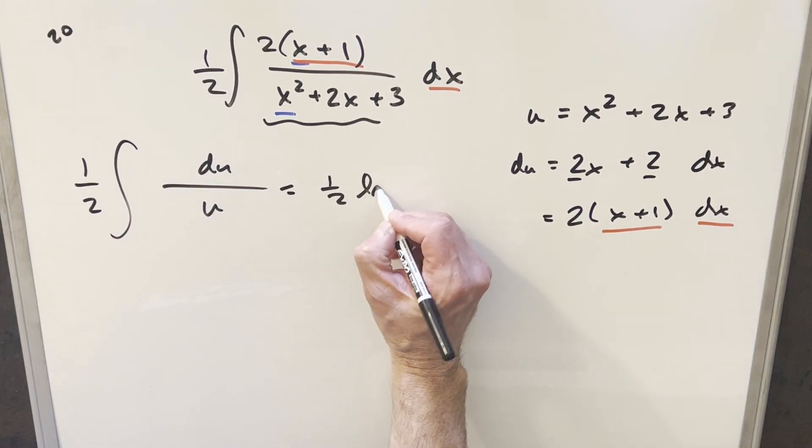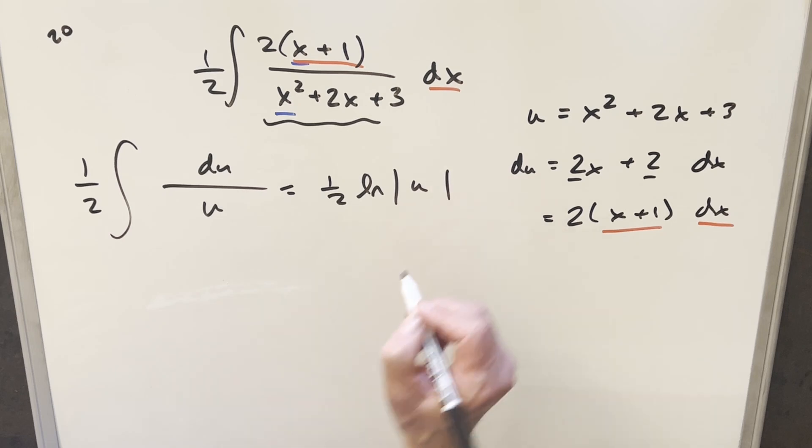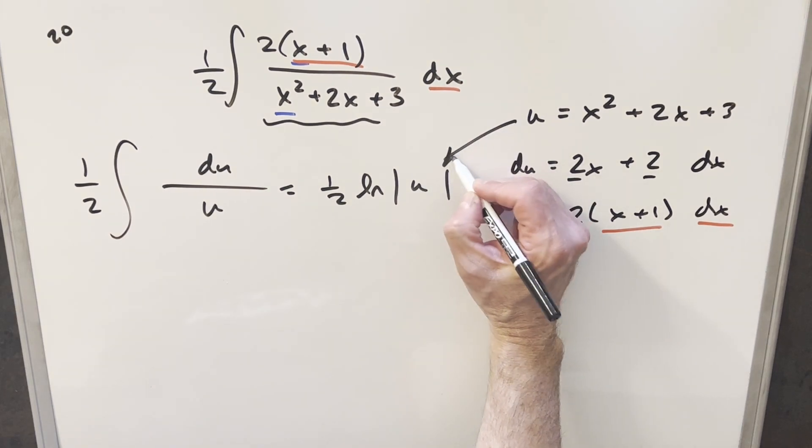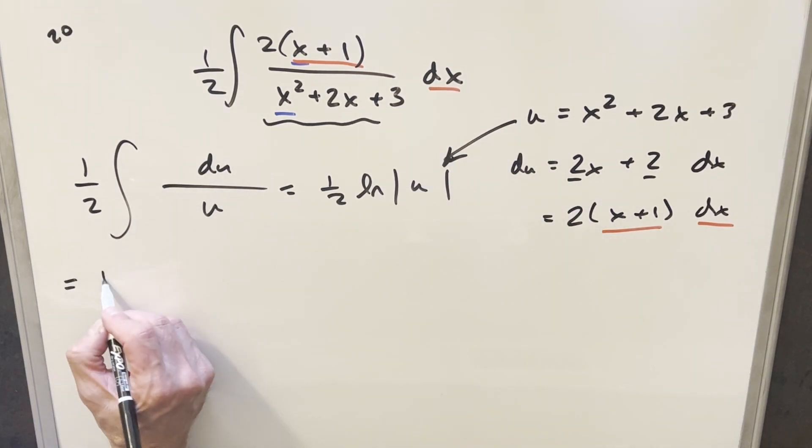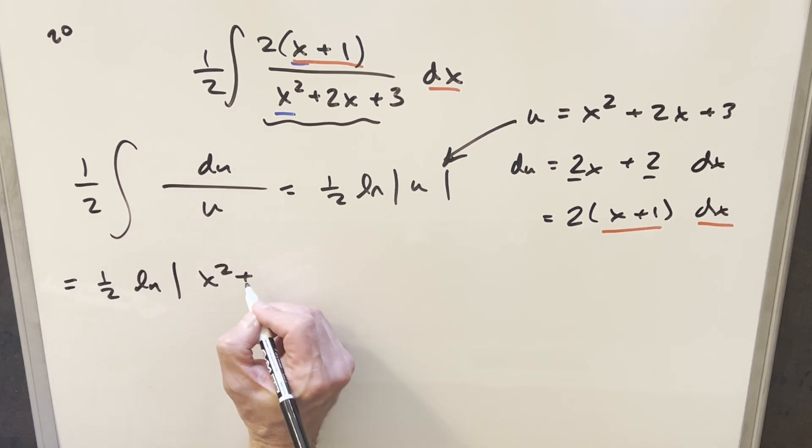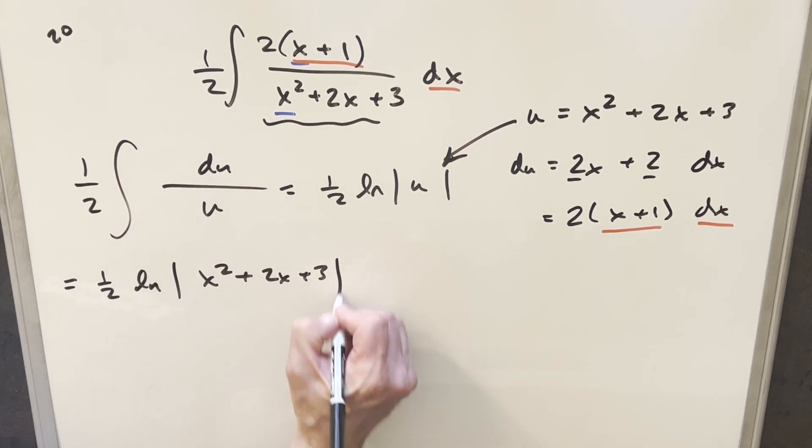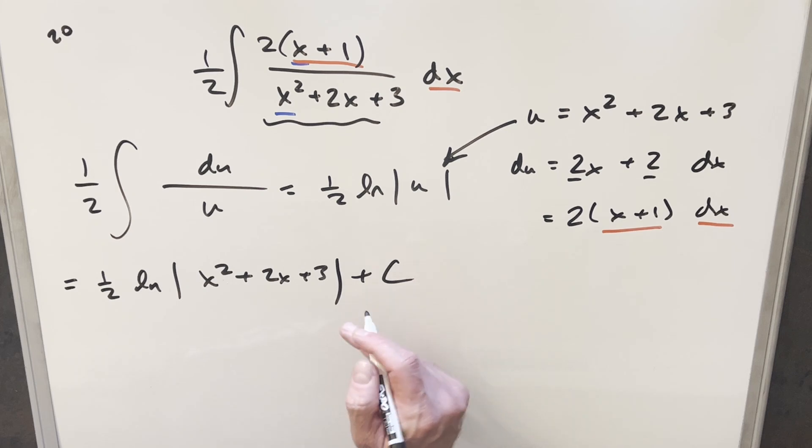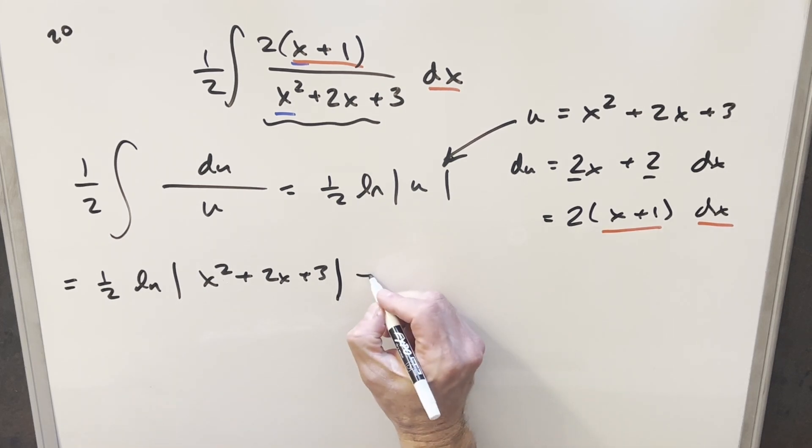We're going to have 1 half natural log absolute value of u, and then we can just back substitute it. We'll just plug this in, and we're going to have, this is going to become 1 half natural log absolute value x squared plus 2x plus 3, add a plus c on here.